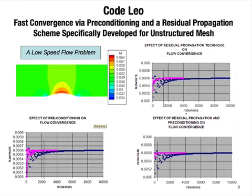On the other hand, the upper right-hand chart shows what happens when we turn on the residual propagation scheme without preconditioning. We find the solution converges in 1600 iterations, compared to the original 8000 — that's a factor of five improvement.